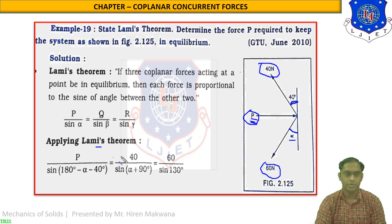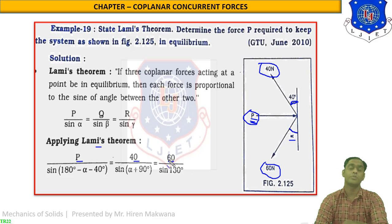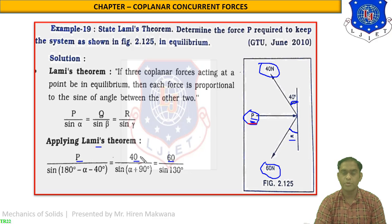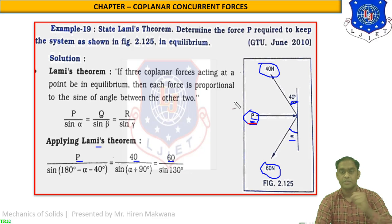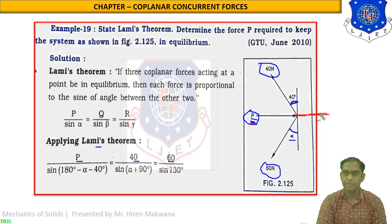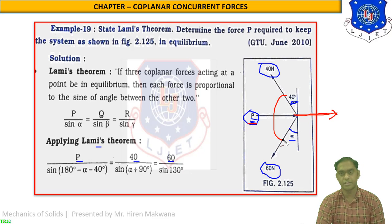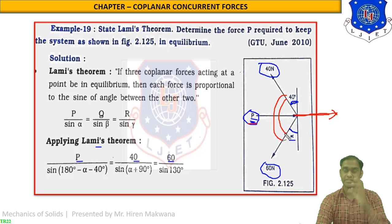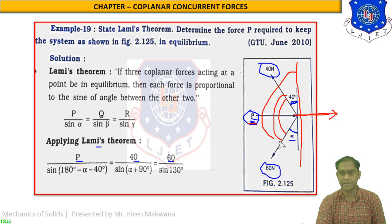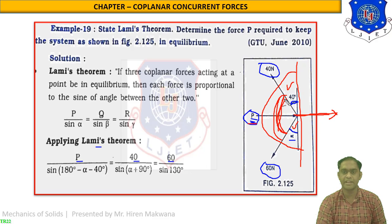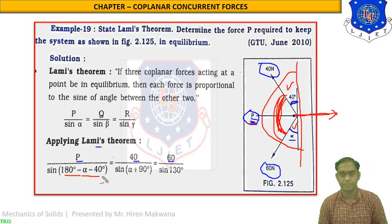What is given: force P, force 40 N, and force 60 N. The key is how to take the angles. Since force P is compressive, it will be converted to a tensile force in the opposite direction. The opposite angle for P is 180 minus 40 minus alpha. For force 40 N, the opposite angle between the other two forces is 90 plus alpha, so the term is 40/sin(90 + alpha). For force 60 N, the opposite angle is 40 + 90 = 130, giving the term 60/sin 130.